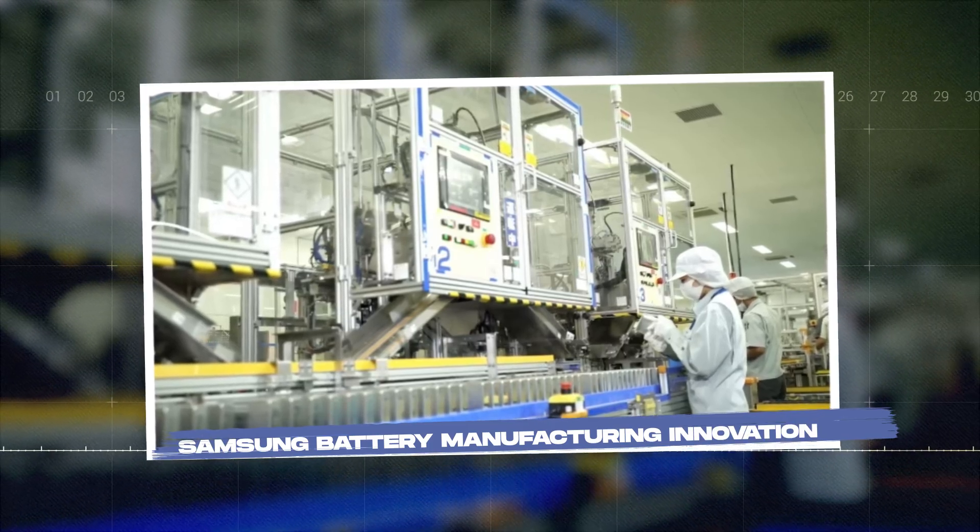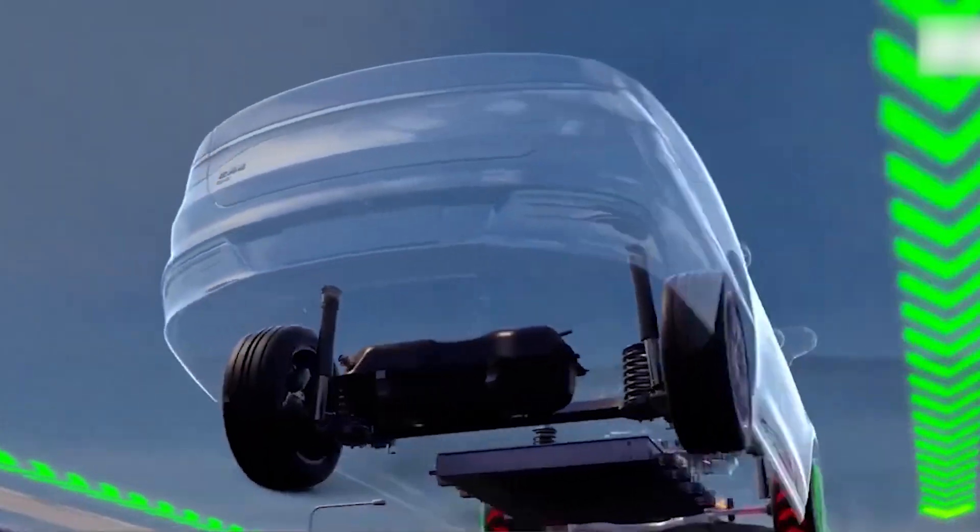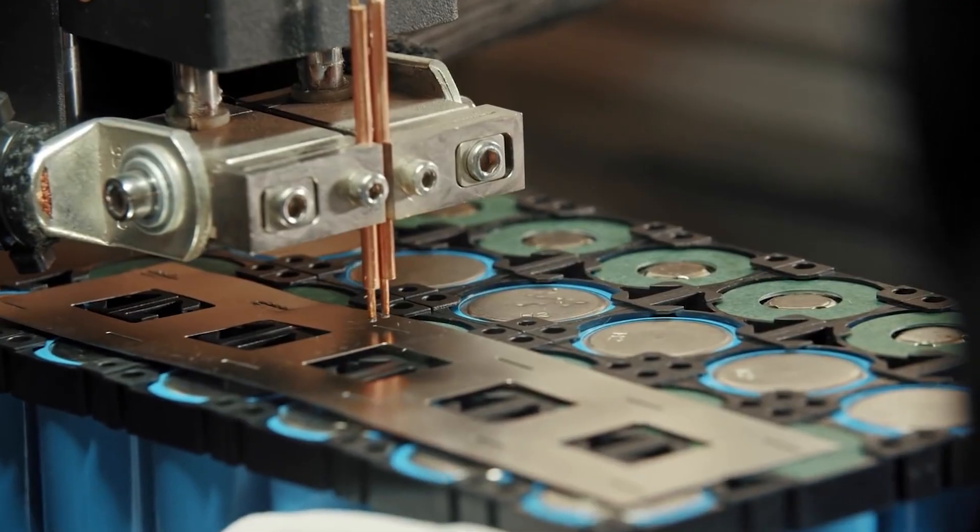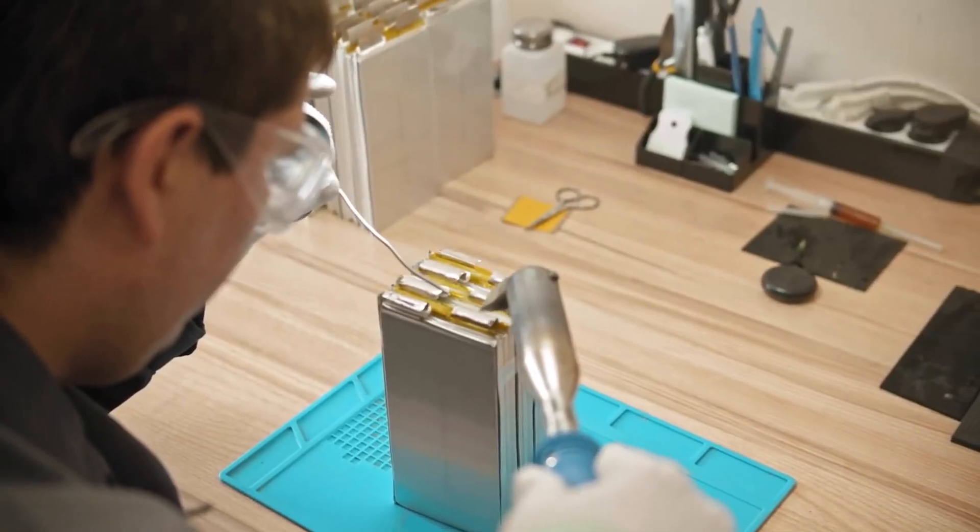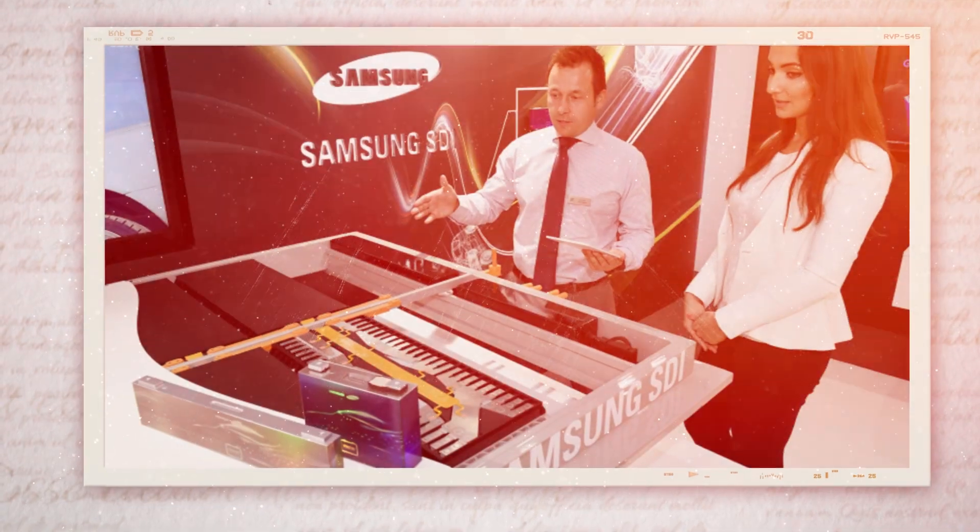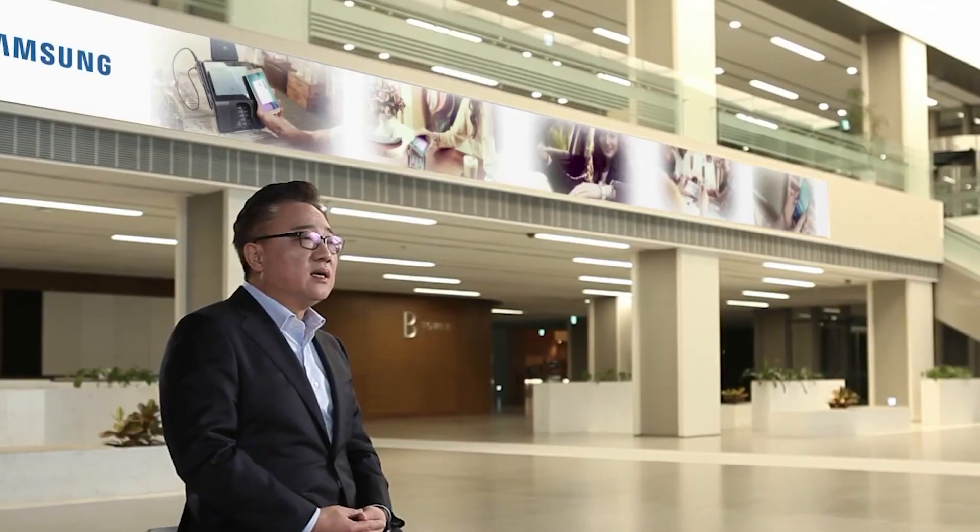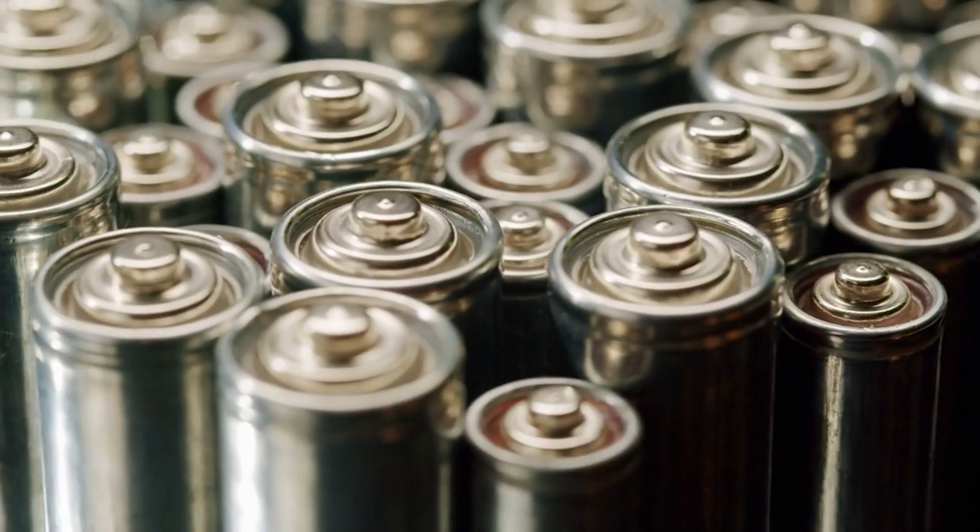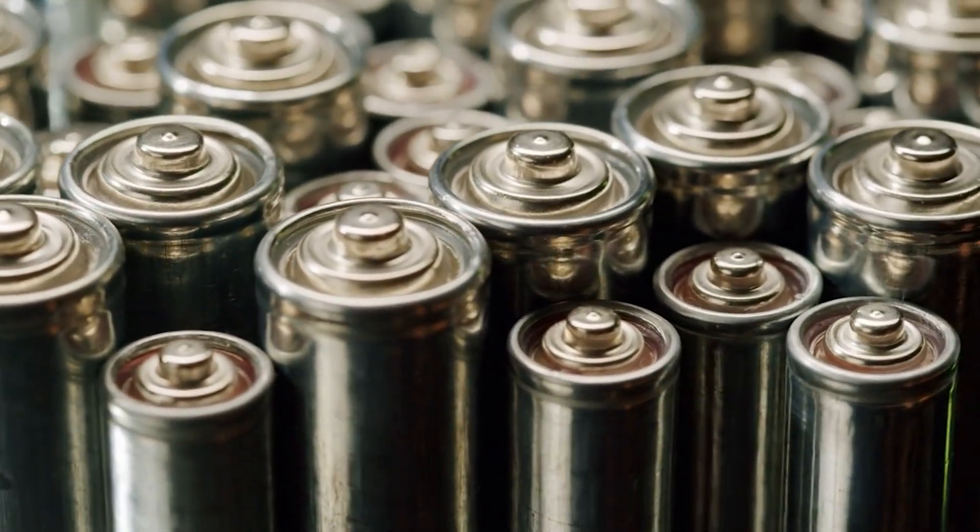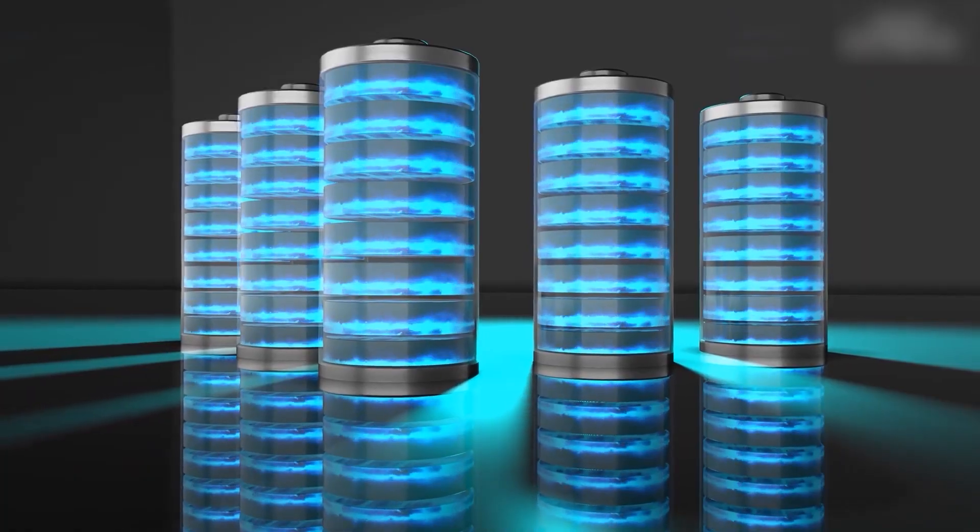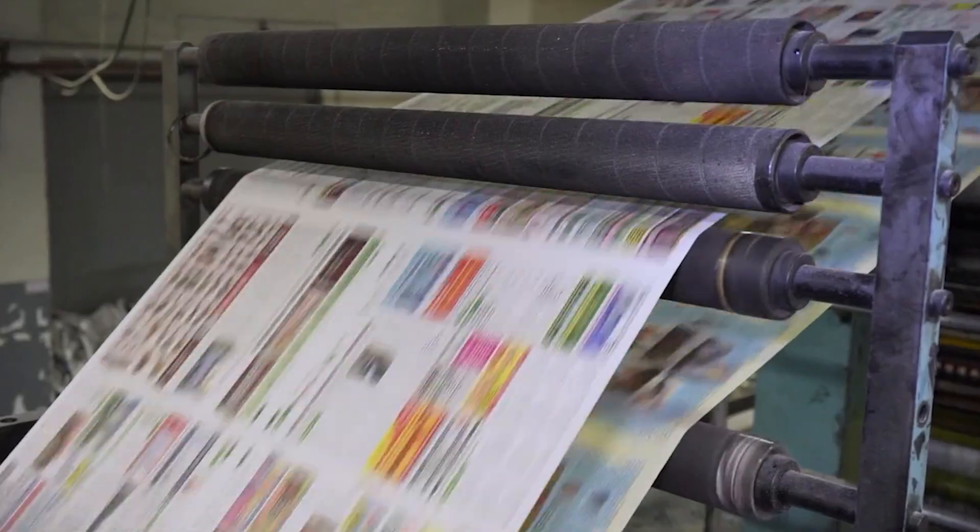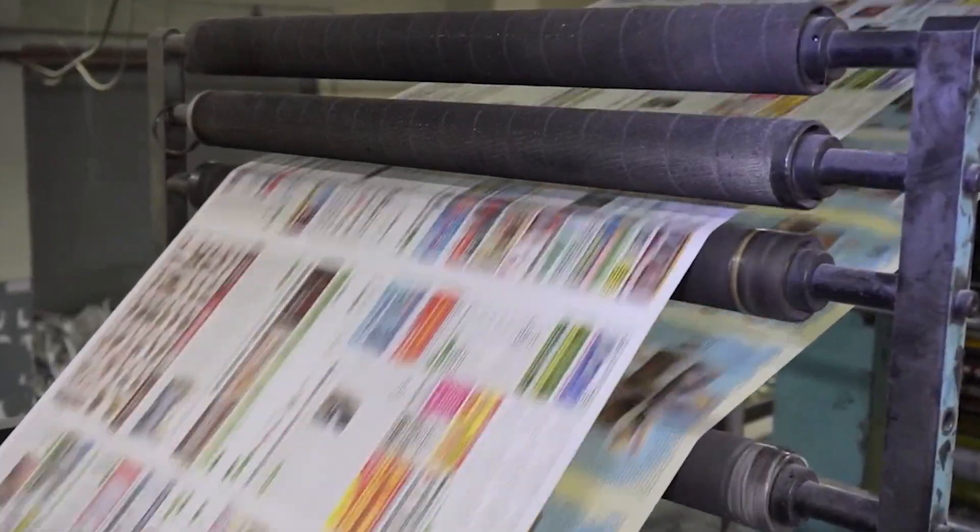Even the most groundbreaking technology is useless if it can't be produced on a large scale at an affordable cost. This is where Samsung's expertise in manufacturing truly stands out. The company has developed an innovative roll-press solid-state assembly process, which according to USPTO filing number 1017822, has the potential to revolutionize battery production. Forget the traditional way of making lithium-ion batteries—slow, complicated, and wasteful. Samsung is changing the game with a high-speed, continuous roll-to-roll manufacturing method, similar to how newspapers are printed.